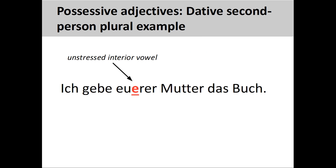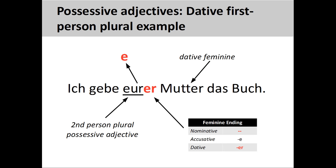We can change the root of the possessive adjective to indicate a change of ownership or relationship, but the dative feminine ending will stay the same since 'Mutter' is still the indirect object in the sentence. The sentence now reads 'Ich gebe eurer Mutter das Buch' — I give the book to your mother. We have, however, the same difficulty as before: the interior -e- is difficult to pronounce. We can again drop the interior -e-: 'Ich gebe eurer Mutter das Buch,' which makes the sentence much easier to pronounce.